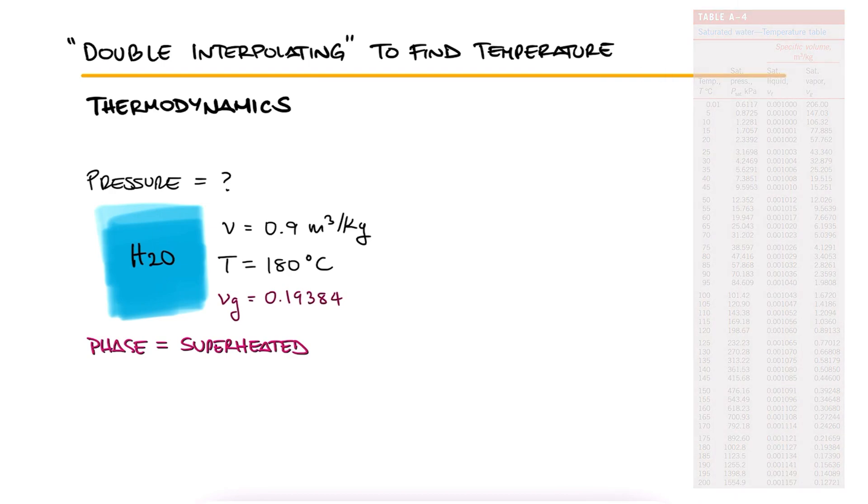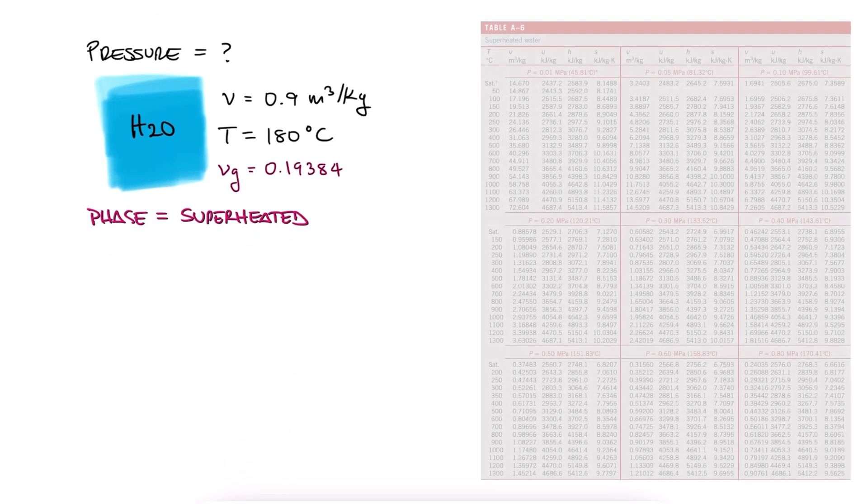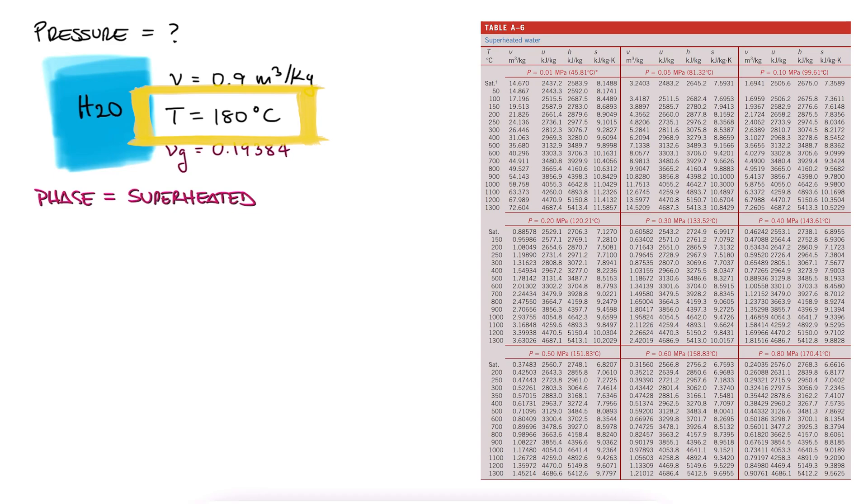With this information, we go to our superheated tables and look for a temperature of 180 degrees Celsius. Since in this table we don't have rows for a temperature of 180, we need to create it. How do we do that?